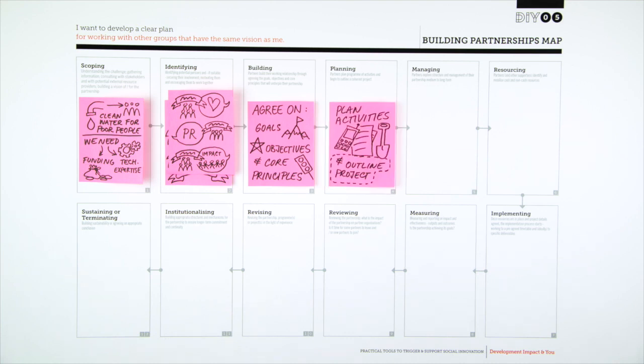Over the next three months, George and his team work through each stage of the map to help them make the partnership stronger. They have been successful in building their network of partners and getting the support they need.